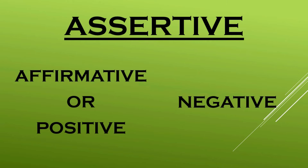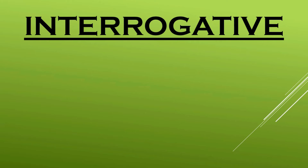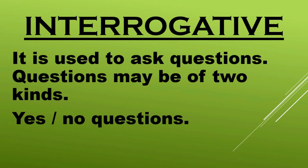The second kind of sentence is known as interrogative. It is used to ask questions. Questions may again be of two kinds. One is known as yes-no questions — there are some questions the answers of which come either in yes or in no, and you need not use a whole sentence for answering such questions.